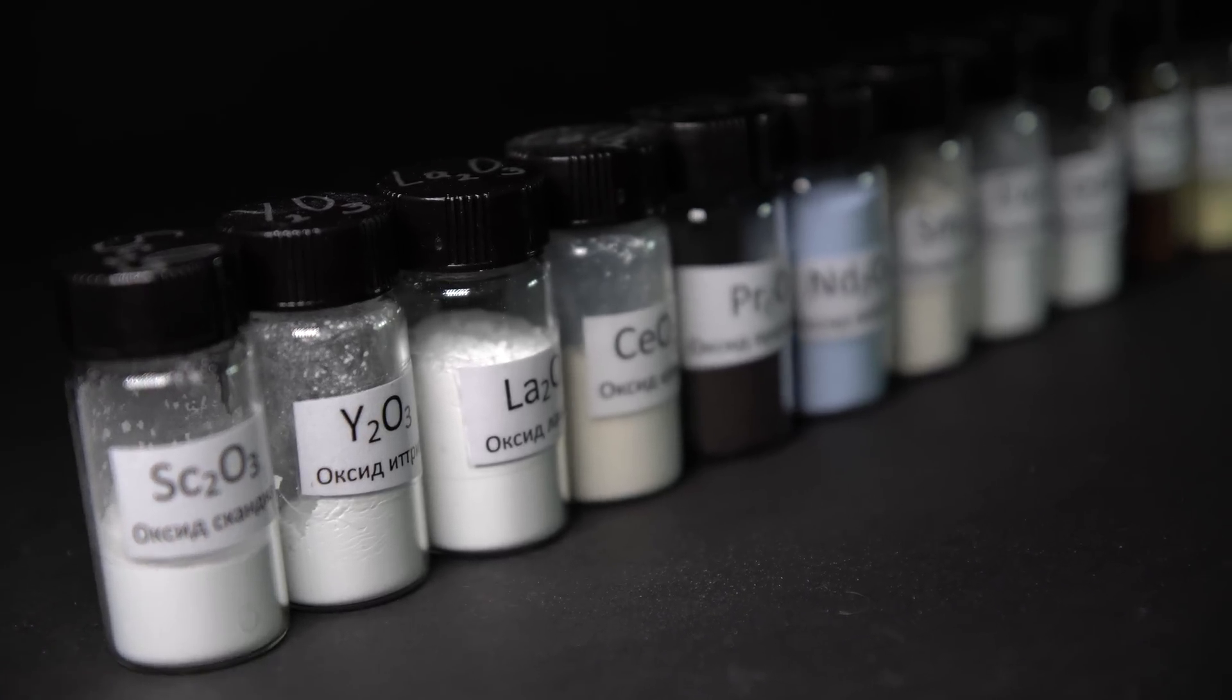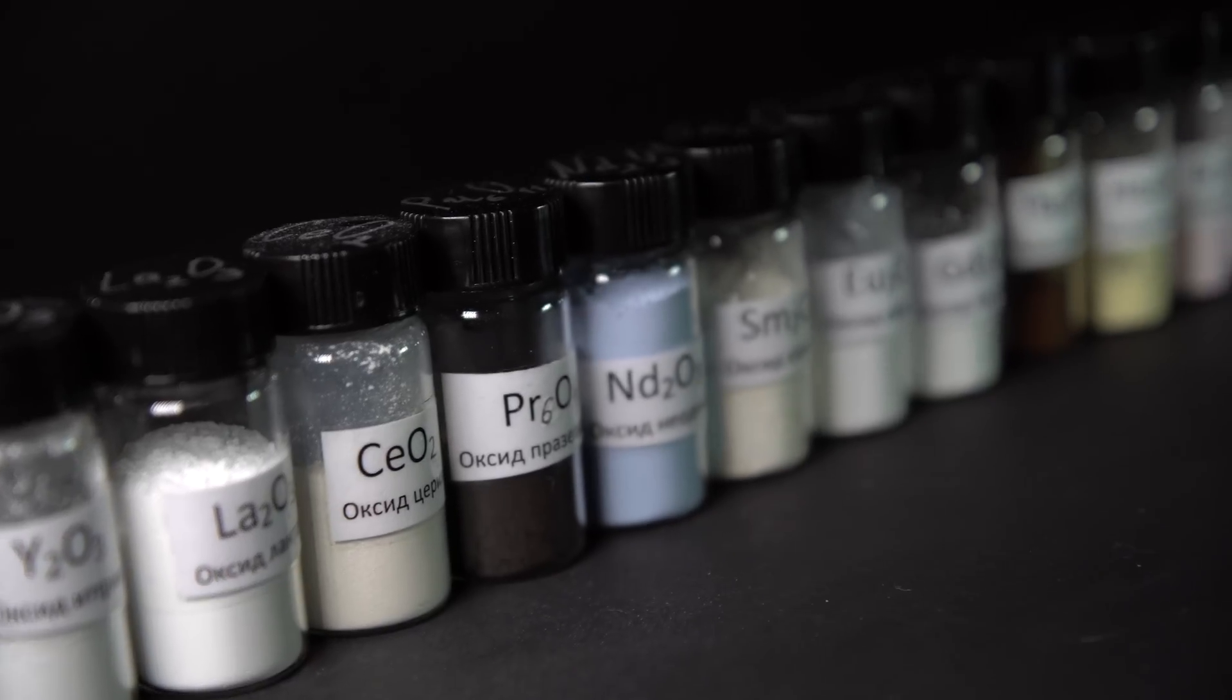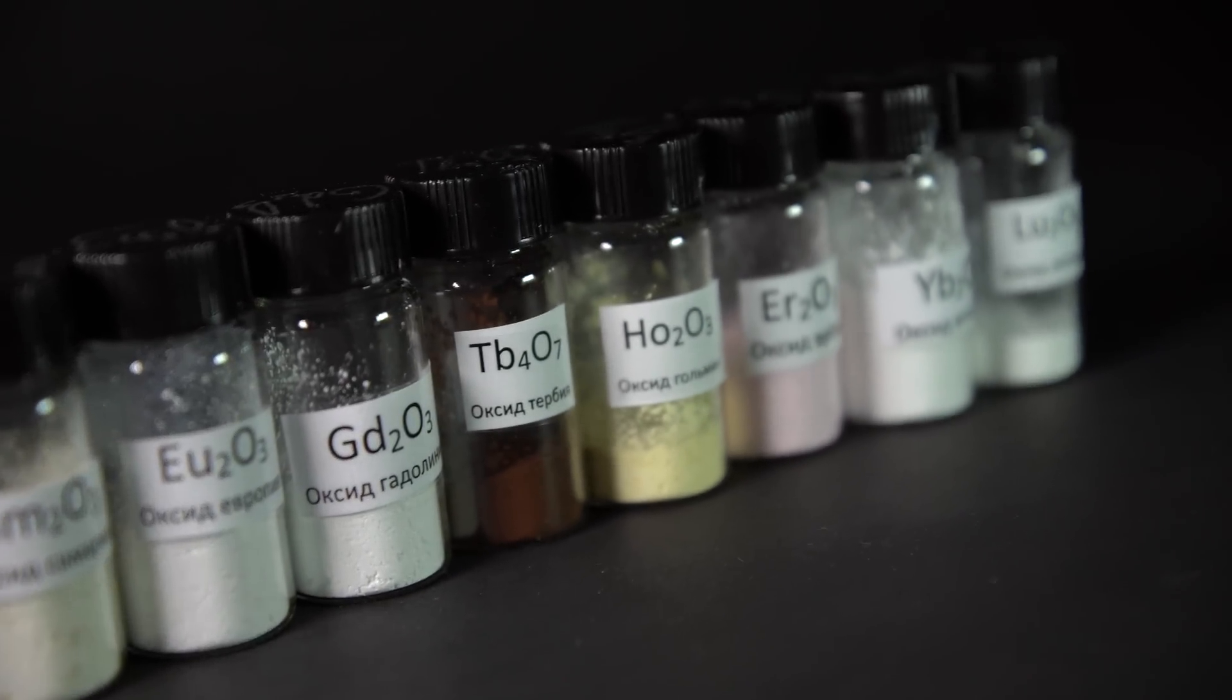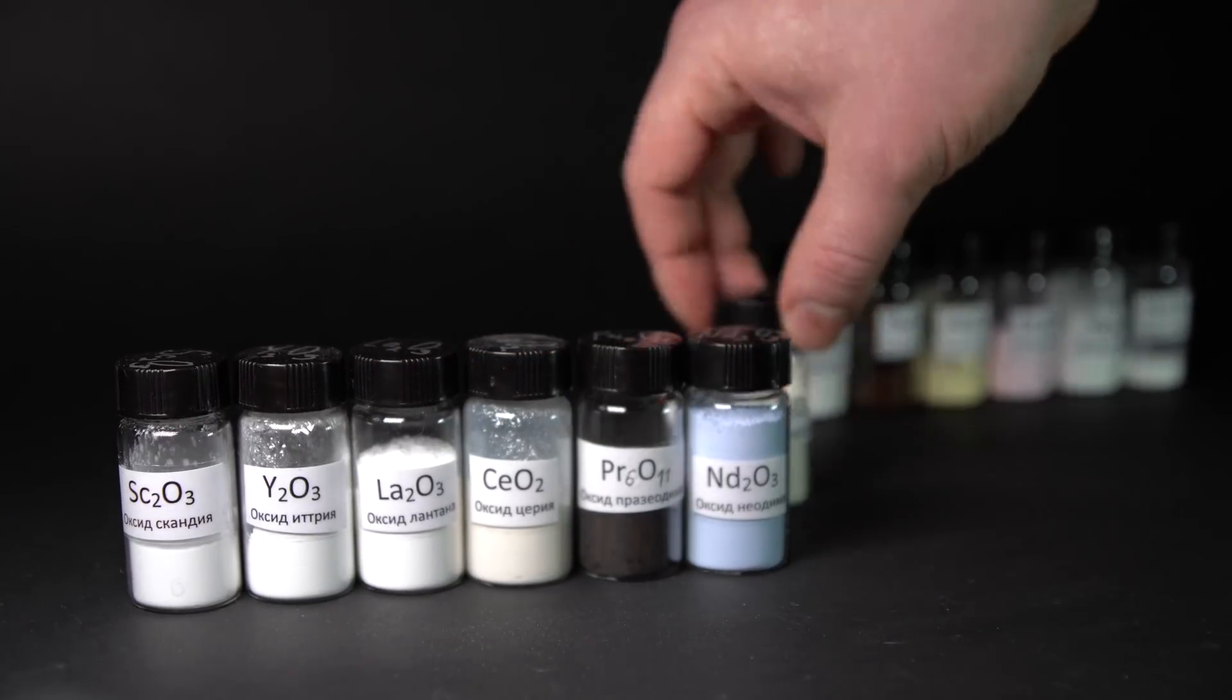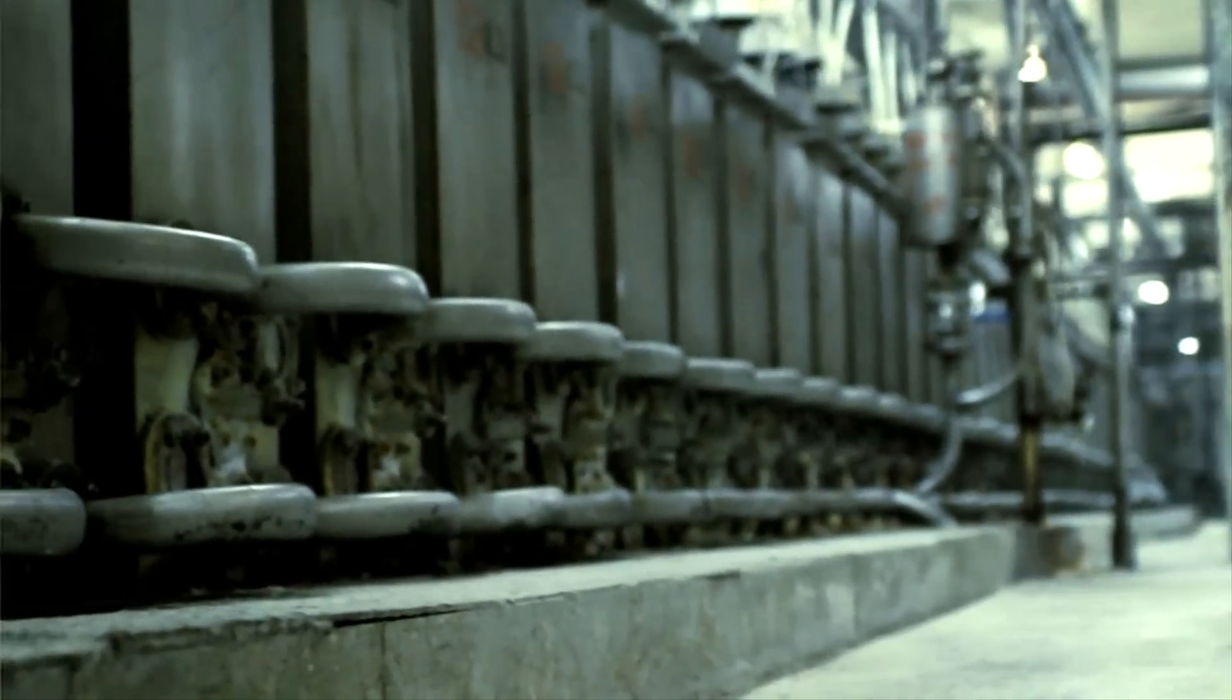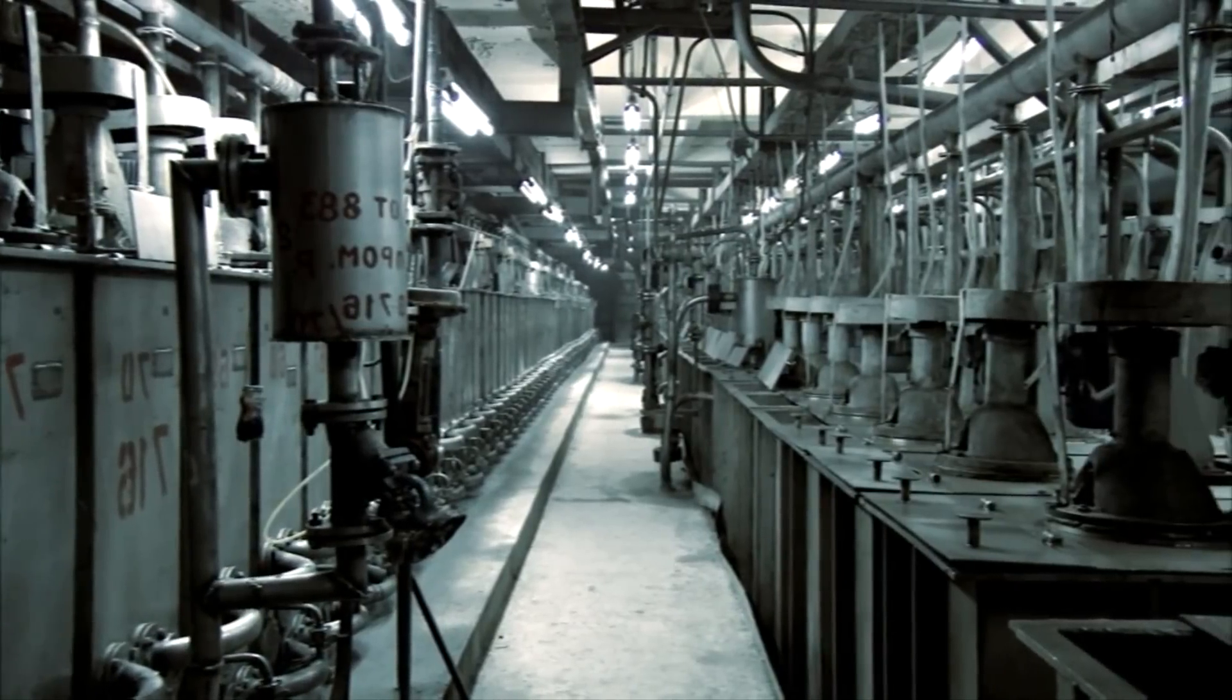Another problem is that chemical separation of one rare earth metal from another is a very difficult thing to do because of the very similar chemical properties of these elements. It is done with the help of special ion exchangers and is very costly.